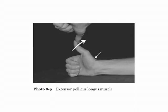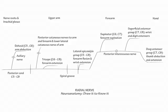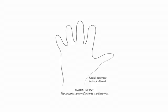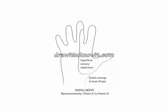Now draw the superficial sensory radial nerve through the forearm segment and into the hand to show its sensory coverage — trace your hand with your palm down. The superficial sensory radial nerve covers the lateral two-thirds of the dorsum of the hand, the proximal thumb, proximal second and third digits, and the proximal lateral one-half of the fourth digit. This completes our drawing of the radial nerve.